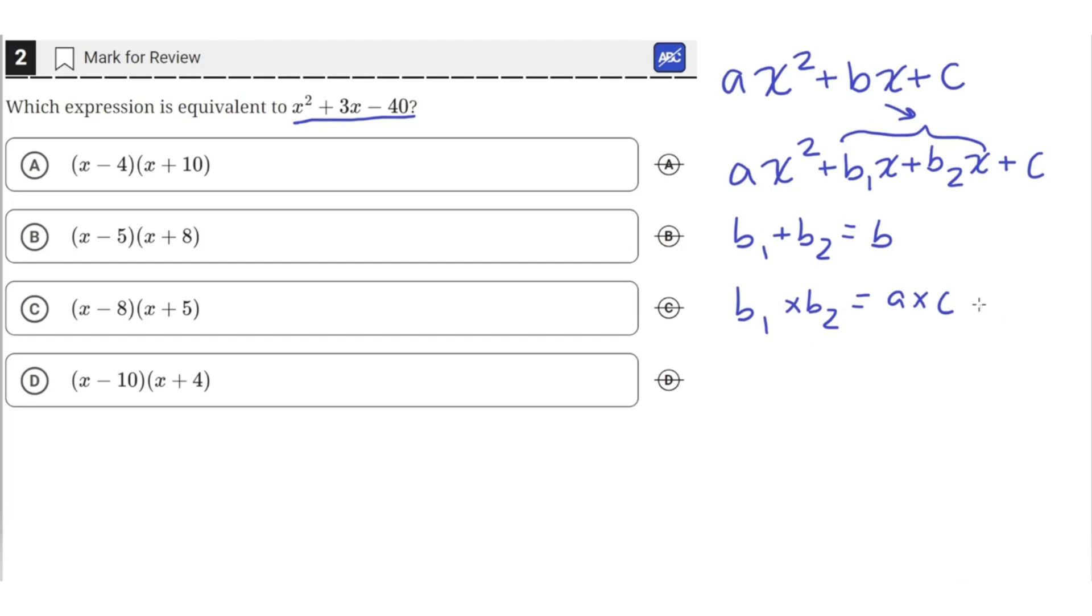In this case, a times c is equal to 1 times negative 40, which is just negative 40.